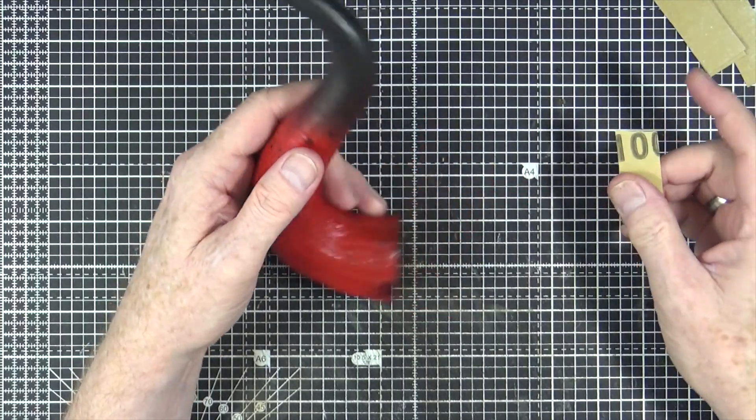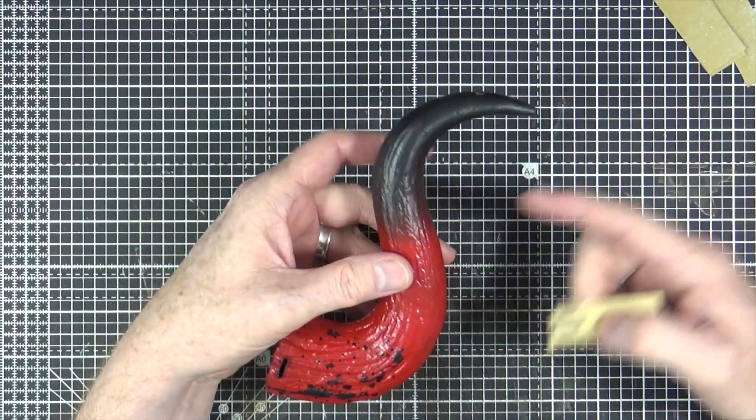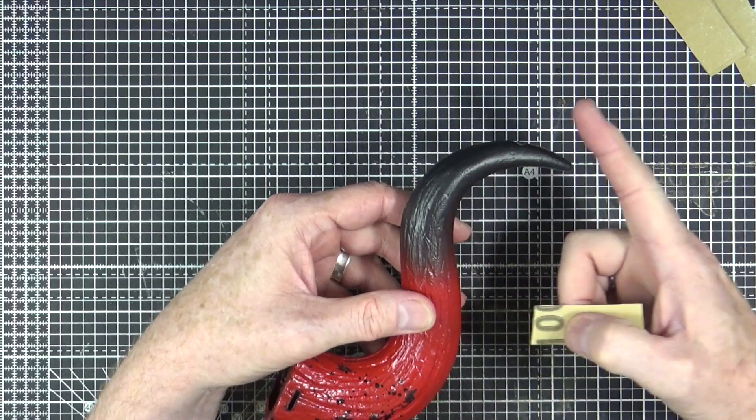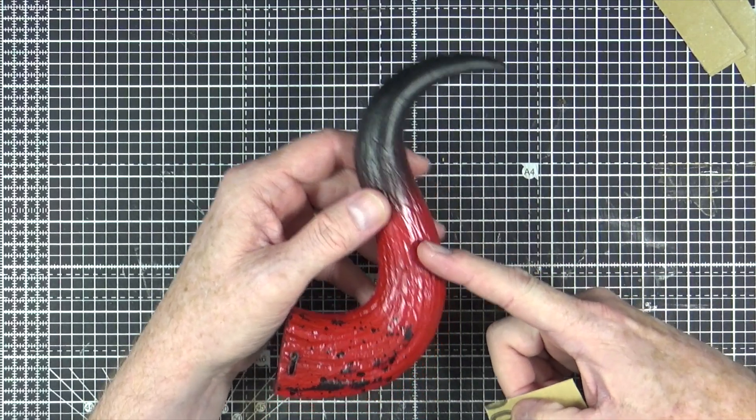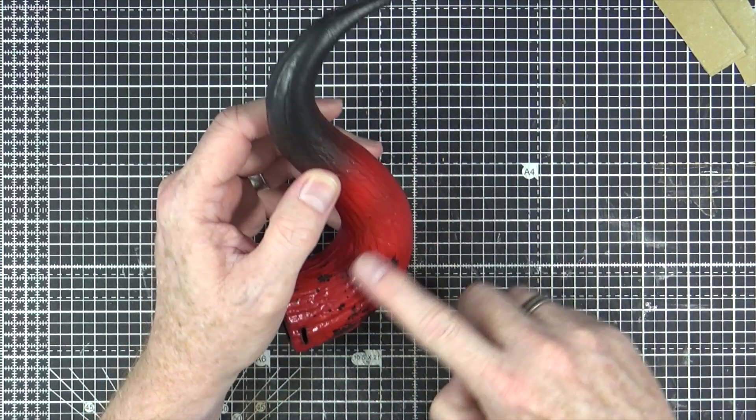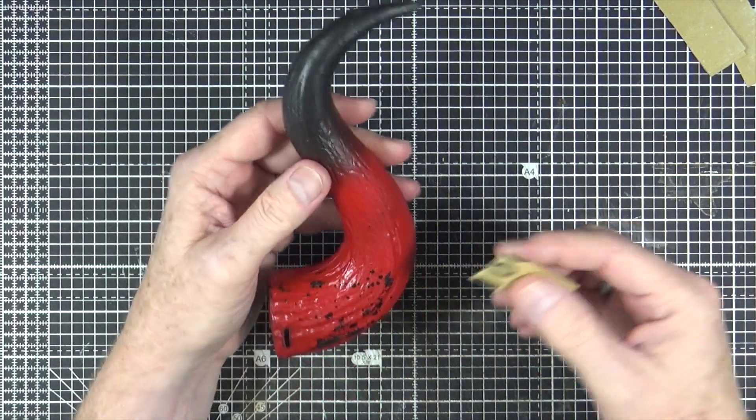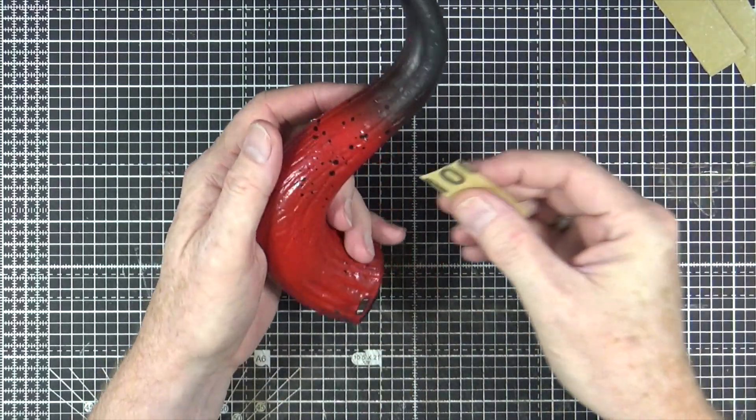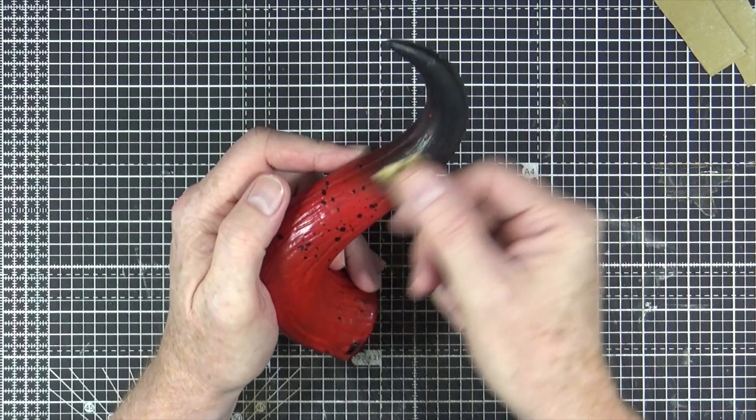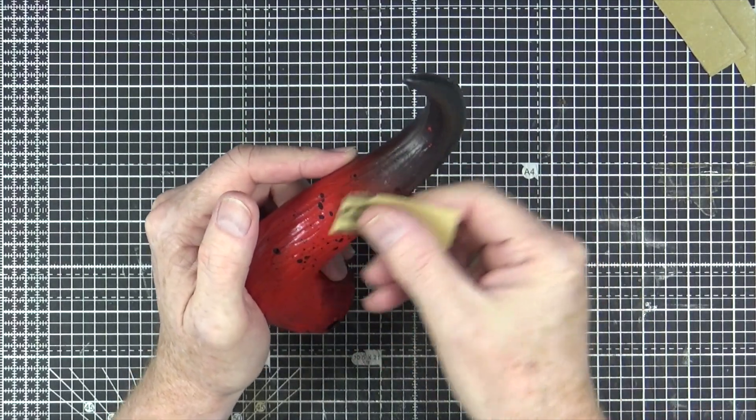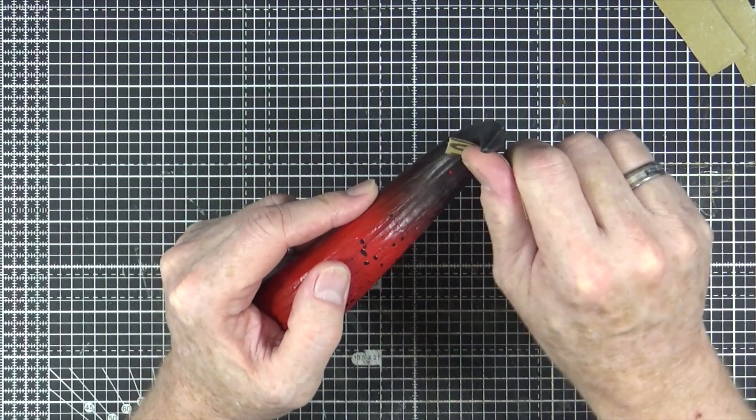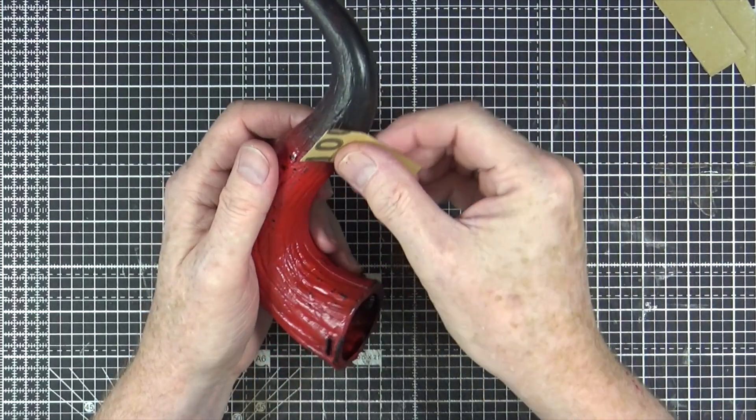So I'll start off doing the one. So this is how it comes in the packet. It's painted obviously with black paint and red paint, and it's just painted over the top of black plastic. So all I've got is just a piece of fine grit sandpaper.